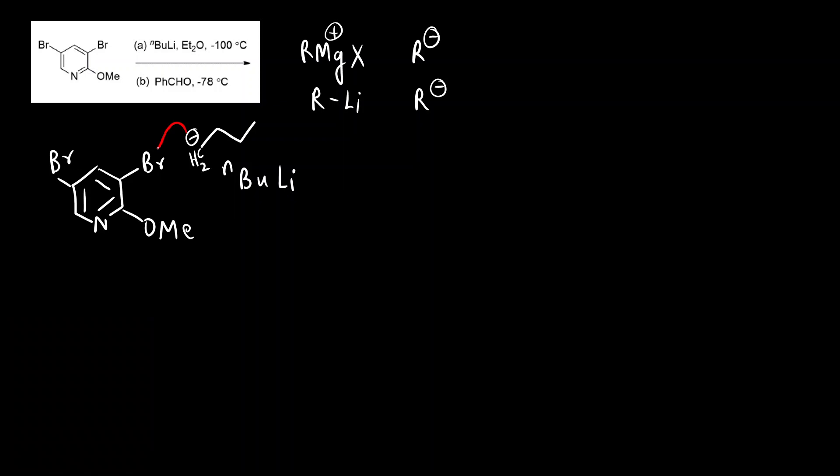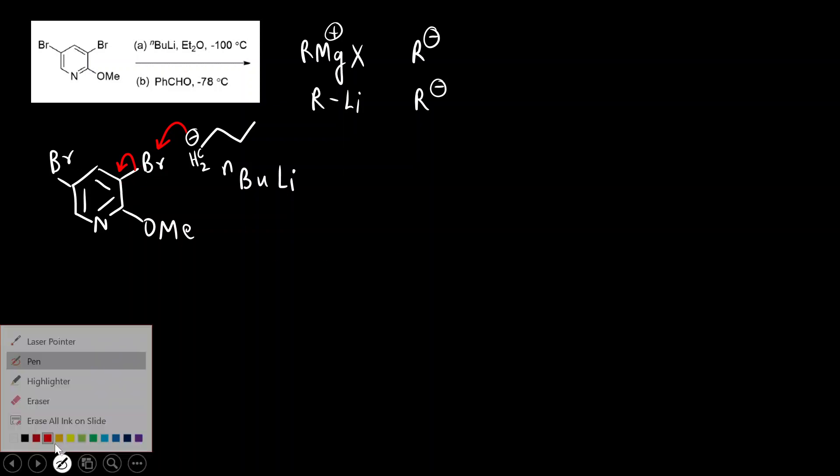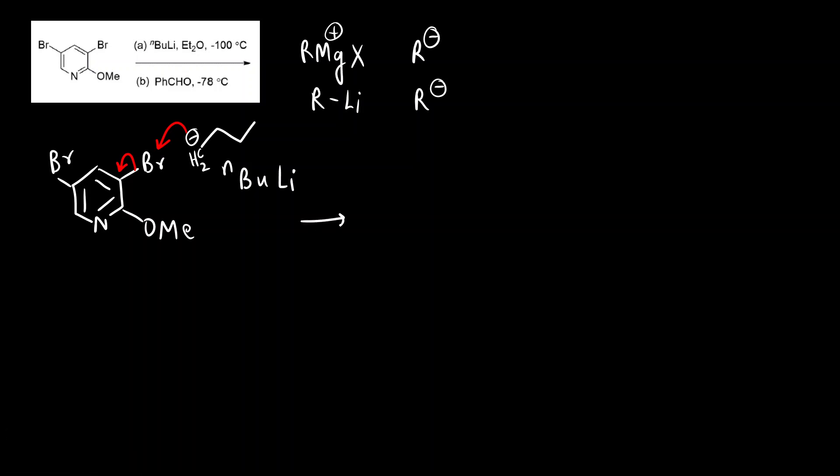This will attack Br and the electrons of the carbon-bromine bond will be at the carbon of the benzene. It will pick up only Br plus, the electrons will be left here, and then what will happen is Br. Here now there is a lone pair.